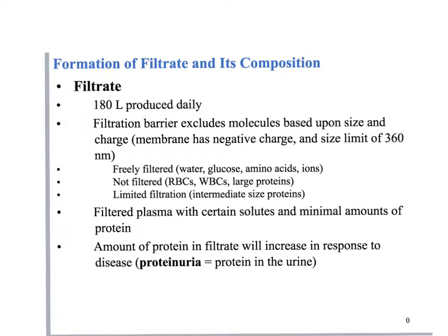As blood flows through the glomeruli, roughly up to 180 liters of filtrate is produced per day. You obviously don't urinate 180 liters — that's about 40 gallons. Most of this filtrate is reabsorbed; greater than 90% gets reabsorbed. The filtration barrier excludes molecules based upon size and charge, resulting in three categories: freely filtered molecules like water, glucose, amino acids, and ions; unfiltered molecules like white blood cells, red blood cells, platelets, and large proteins; and intermediate-sized proteins.